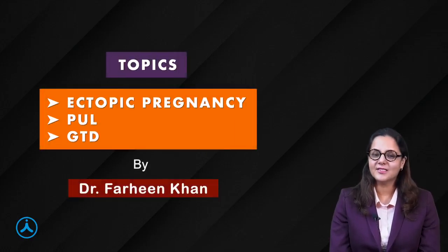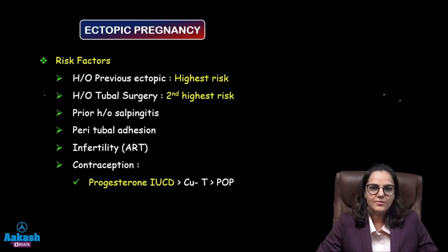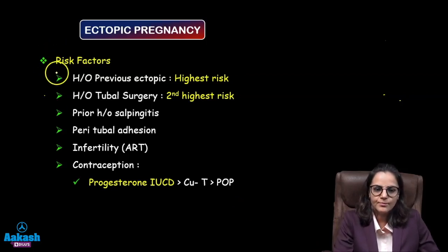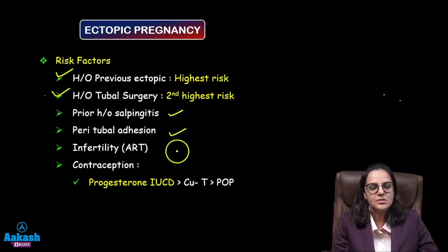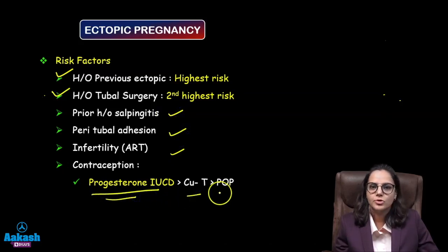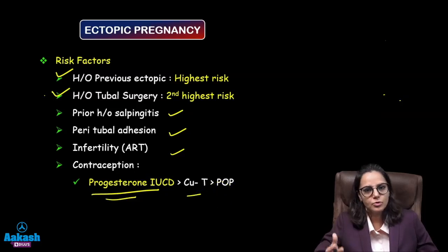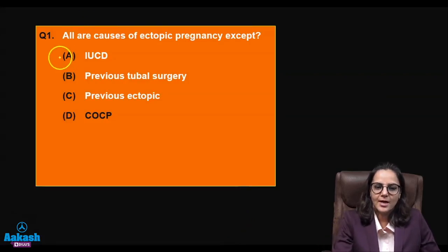The first question is: all are causes of ectopic pregnancy except? The highest risk factor is a previous ectopic pregnancy. The second highest risk factor is prior tubal surgery. Other risk factors include prior tubal infection, tubal adhesions, and artificial reproductive therapy. In contraception, the highest risk is with progesterone IUCD, followed by copper-T and progesterone-only pill. Progesterone decreases tubal motility.